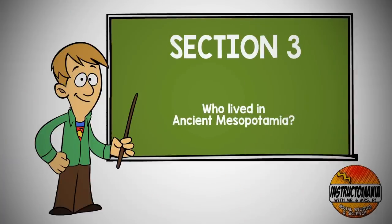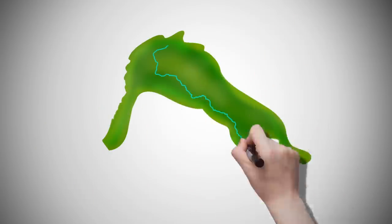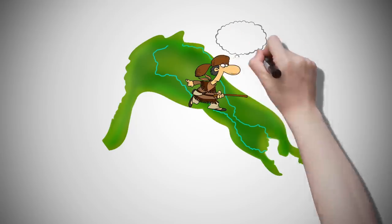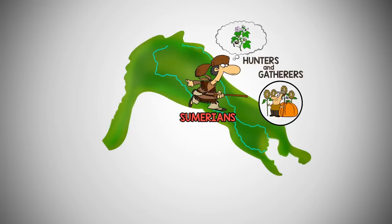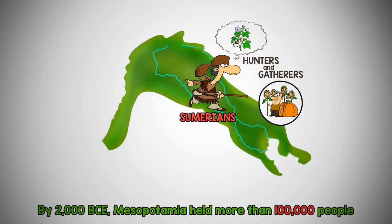Section 3: Who lived in ancient Mesopotamia? The original hunter-gatherers of Mesopotamia eventually settled along the Tigris and Euphrates Rivers. These original people have become known as Sumerians. Groups of rural farming communities surrounded an urban city center. These areas became city-states run by a Sumerian king and protected by his army. Sumerians worshipped nature-based deities, with each city-state focused on a particular god. By 2000 BCE, Mesopotamia held more than 100,000 people.